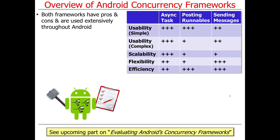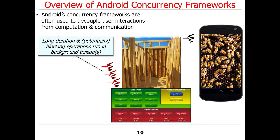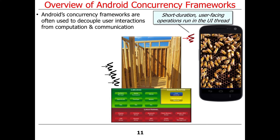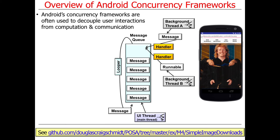We use these frameworks to decouple user interface interactions — which must take place in the main UI thread — from longer-running computations and communications that take place in background threads. Long-duration and potentially blocking operations run in background threads, either spawned by you or by the AsyncTask framework. Short-duration, user-facing operations run in the UI thread. The frameworks mediate those interactions, which is why they go above and beyond Java concurrency mechanisms that don't know anything about these constraints.